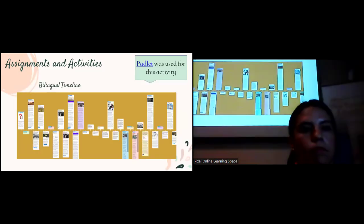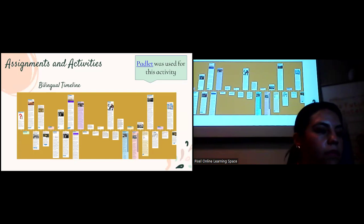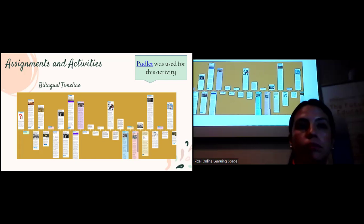One of the assignments, the bilingual timeline, was something like this. This is from that specific class where each student was given an era to look at, like the policy and history of bilingual education during the 1890s and 1920s. In groups, they created a bilingual timeline. This allowed them to not just read about bilingual education, but also deeply engage in thinking about how the history and policies in the United States led to the way bilingual education is shaped.